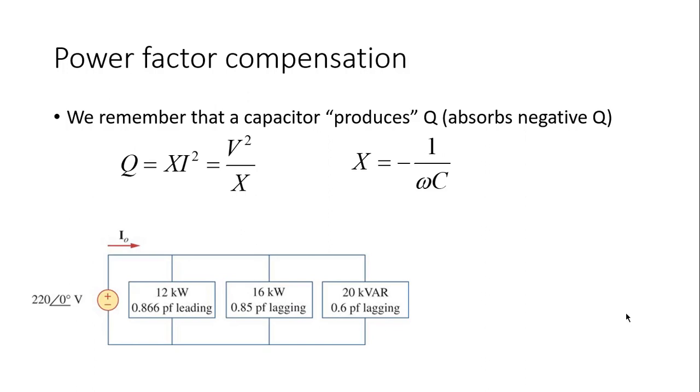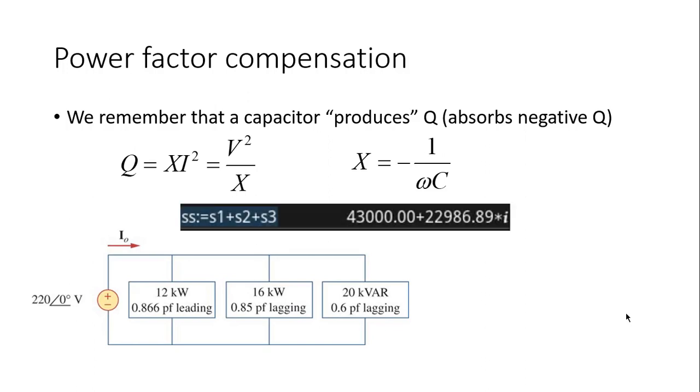There is our system. We will connect in parallel with it a capacitor that will take care of that reactive power. That capacitor has to absorb negative 23 kiloVAR. That is, it is producing 23 kiloVAR so that the source on the left has to preoccupy itself only with delivering 43 kilowatts, the active power. That is the question that we have today.